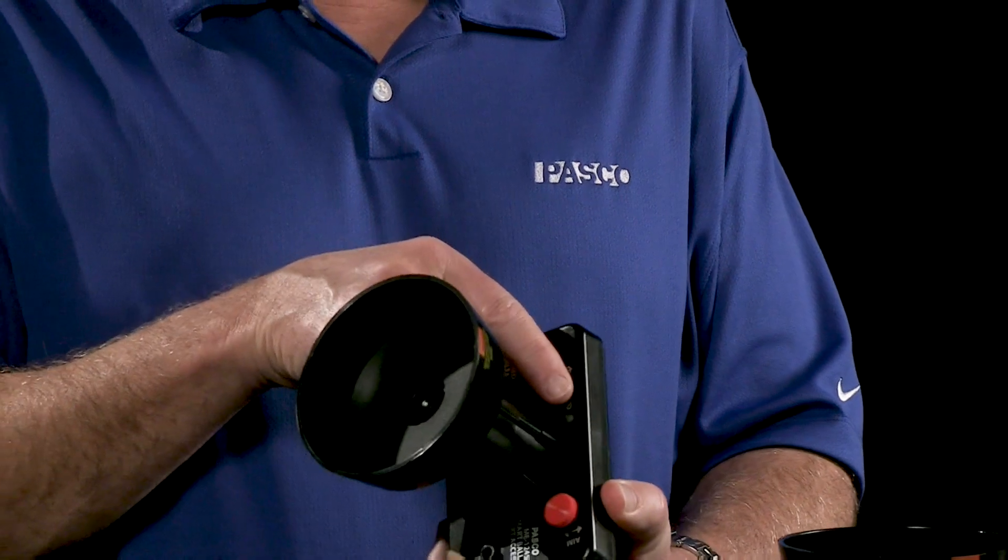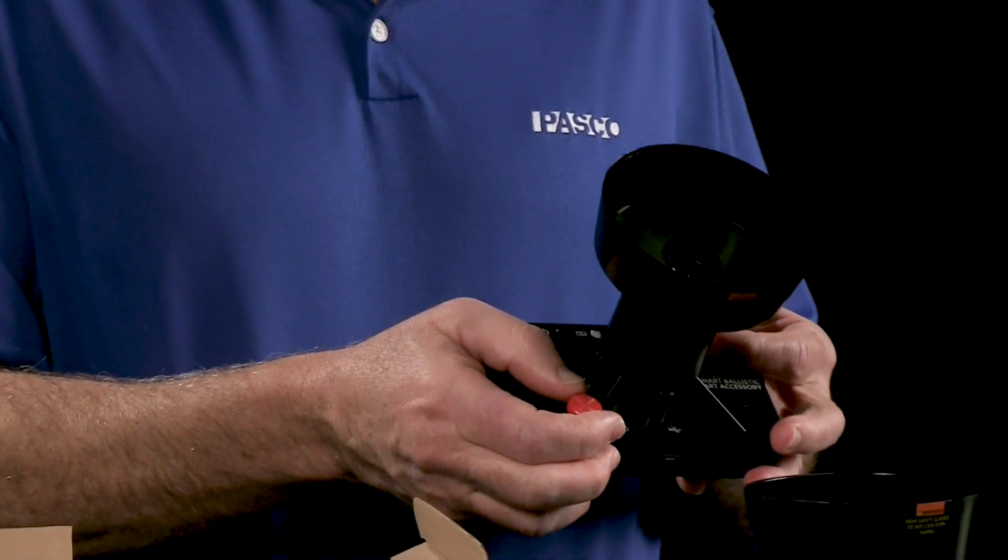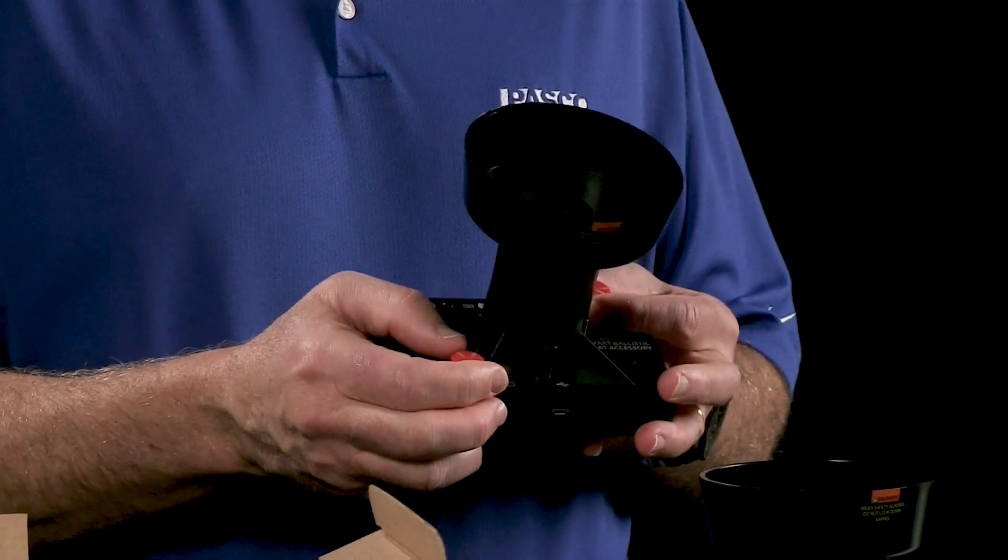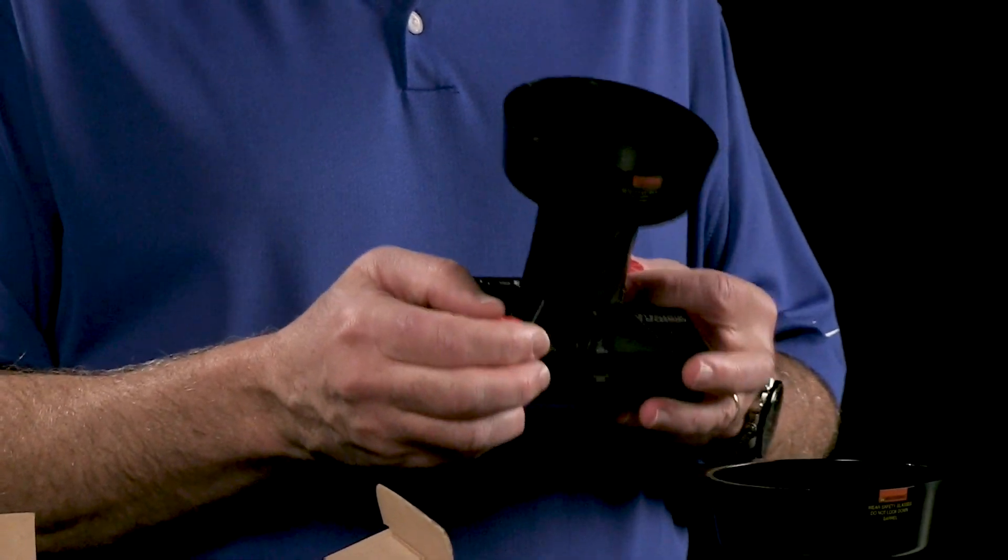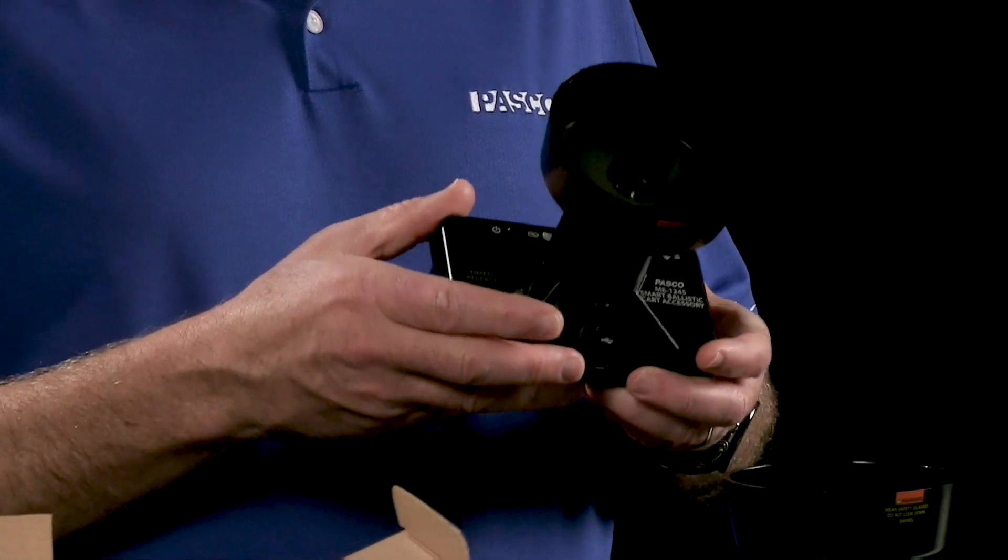There's a power button. There are a couple of aiming screws, which are crucial for adjusting the aim of the cart before you do any demonstration. This one I've already adjusted, but that would be one of the first things you would do.